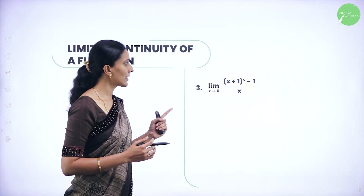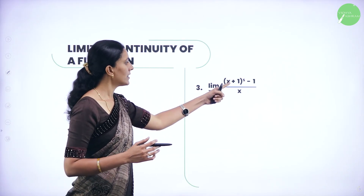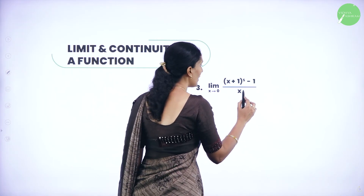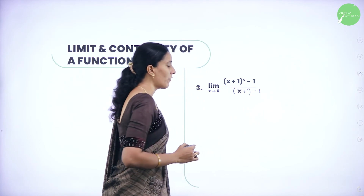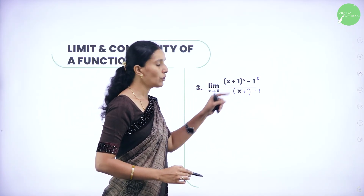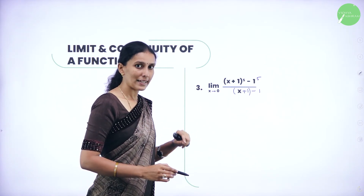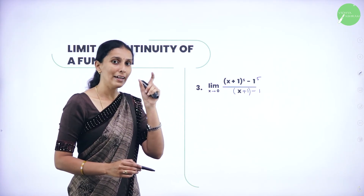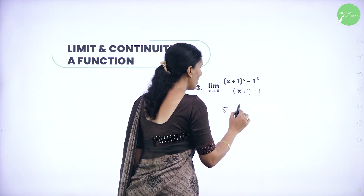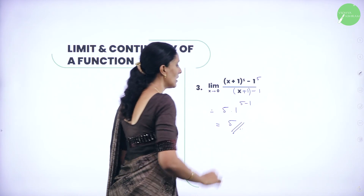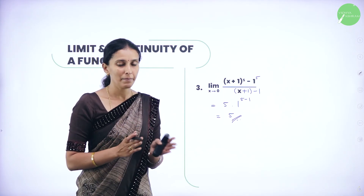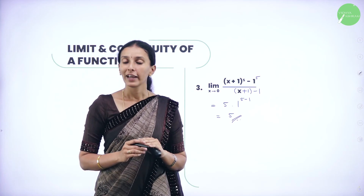Next question: limit as x tends to 0 of x plus 1 whole power 5 minus 1. Here the x term in the standard form is x plus 1. So the denominator must contain x plus 1 minus 1. We add and subtract 1 so it looks like x plus 1 whole power 5 minus 1 power 5, divided by x plus 1 minus 1. Now it takes the form x power n minus a power n divided by x minus a, where a equals 1 and n equals 5. The value equals n into a power n minus 1, that is 5 into 1 power 4, which equals 5.